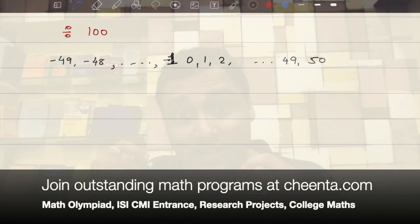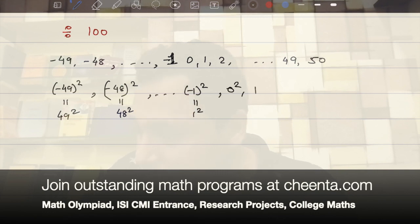Because we are interested in square numbers, remember? We are interested in squaring a number and then dividing the square by 100. So, if I square it, I will get negative 49 squared, which is same as 49 squared, negative 48 squared, that is 48 squared, and so on, up to negative 1 squared, which is just 1 squared. Then we have 0 squared, 1 squared, 2 squared, 49 squared, and 50 squared.